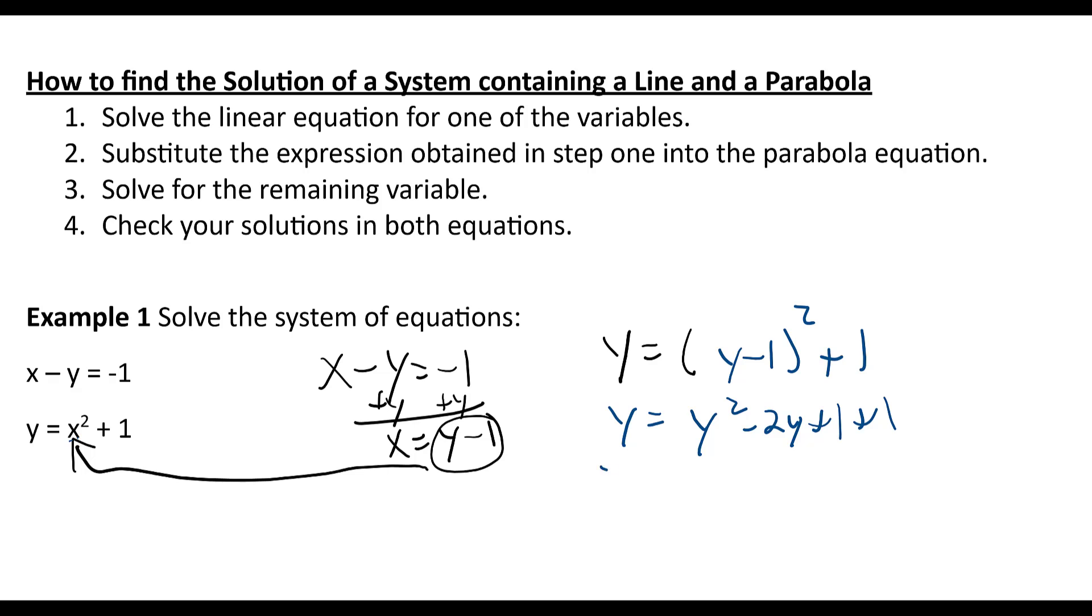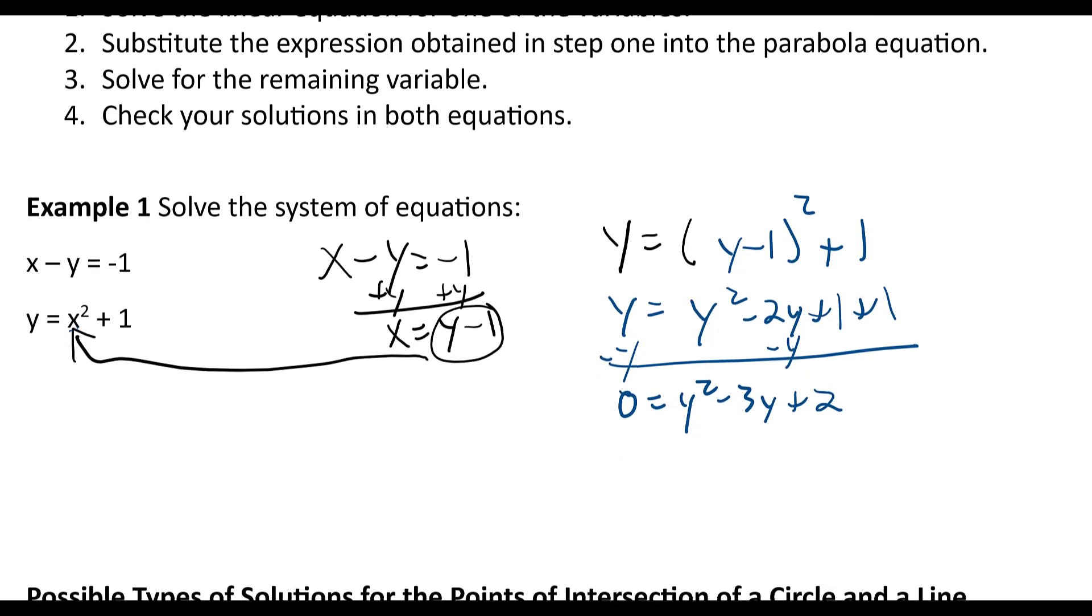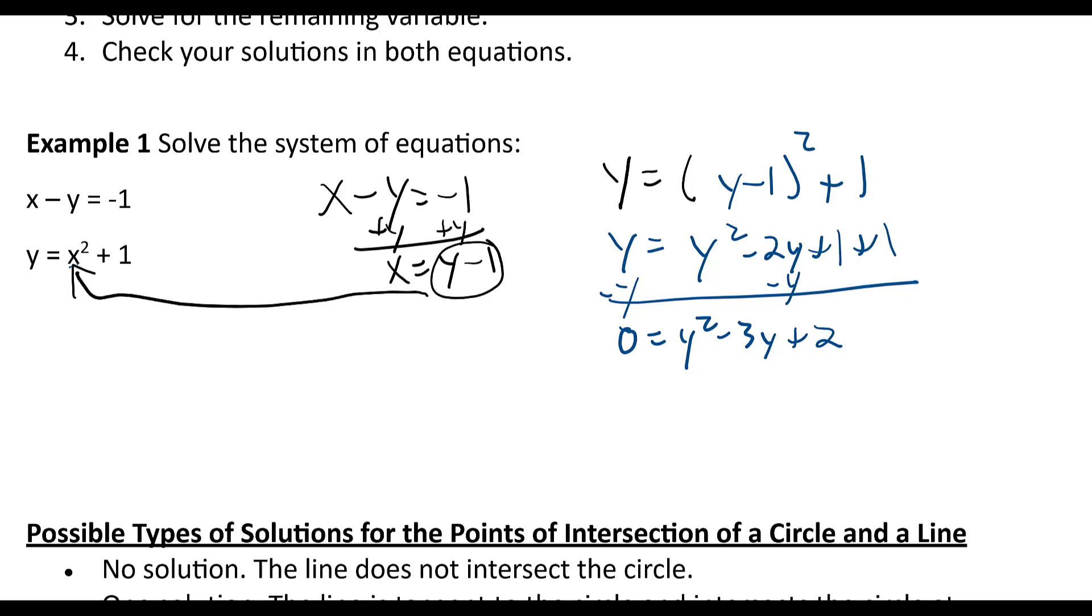And then if I subtract the y from both sides and simplify, we have zero equals y squared minus three y plus two. Now this is factorable as zero equals y minus two times y minus one. So y minus two equals zero means y equals two. Y minus one equals zero means y equals one.